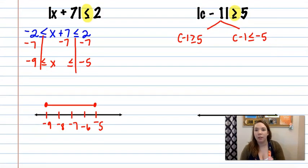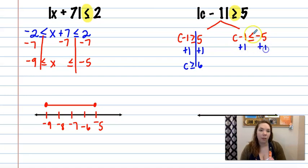So at this point, we have to solve these individually. So I'm going to add 1 to both sides and get c is greater than or equal to 6. Again, I'm going to add 1 to both sides and get c is less than or equal to negative 4.